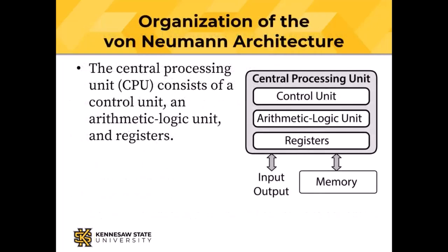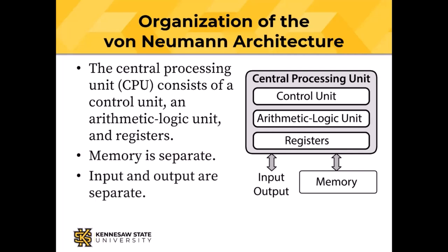The organization that von Neumann proposed looks like this: there is a central processing unit with three parts — a control unit, an arithmetic logic unit, and some number of registers — and then memory is separate and communicates with the CPU, and input and output are separate operations.